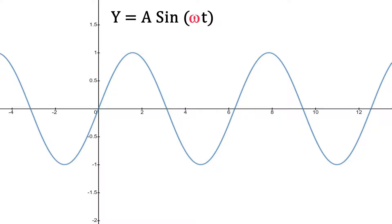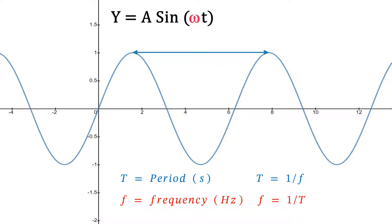We have y equals a sine omega t, the general equation for a sine wave, where a is the amplitude and omega t is an angle. The period is the amount of time for one cycle or one waveform, and it's equal to one divided by the frequency, and vice versa.